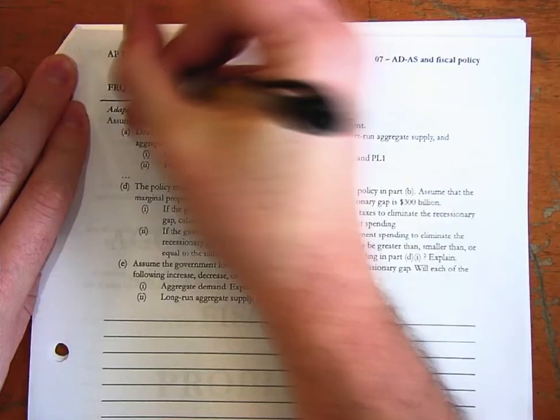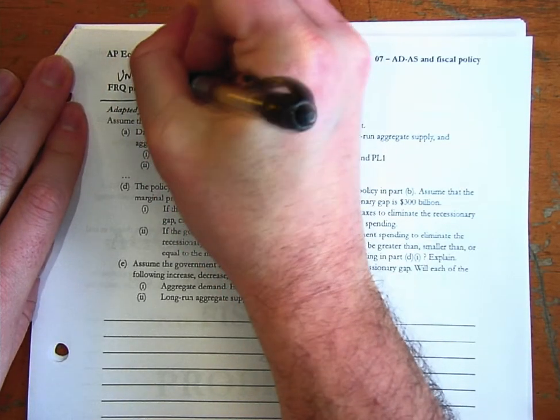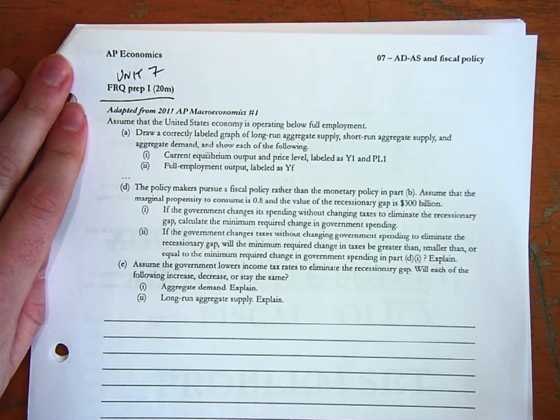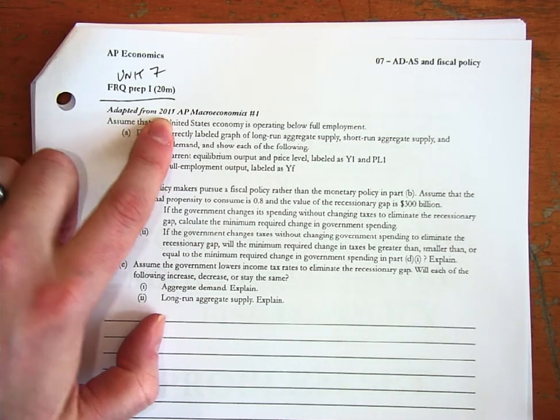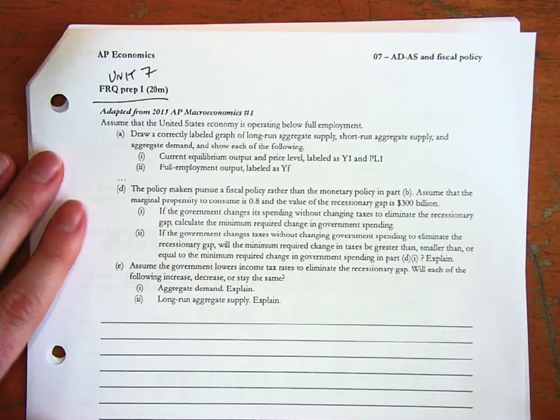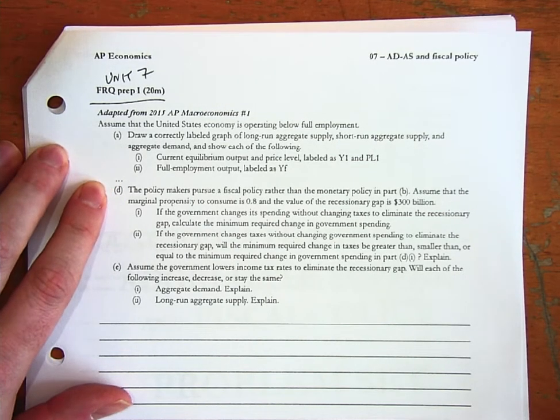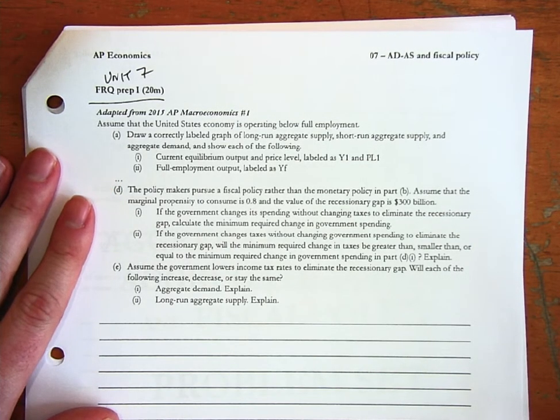First free response prep question in unit 7, which is aggregate demand, aggregate supply, and fiscal policy. We're going to take a 2015 AP macro question number 1. We're not going to do parts B and C because that's actually monetary policy from the next unit, but we'll get there.